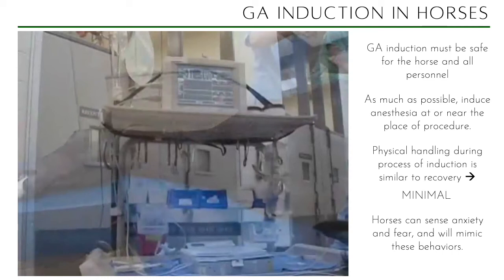Physical handling should be minimal during recovery. In horses, you let them recover alone but guided with ropes tied to the tail and nose area. Horses can sense anxiety and fear and will mimic these behaviors. For GA induction, it is the same for cattle — but one important difference is the direction of their kick: horses kick backward while cattle kick to the side. When cattle are anesthetized, they tend to become splayed.